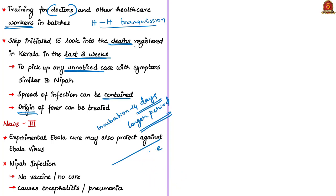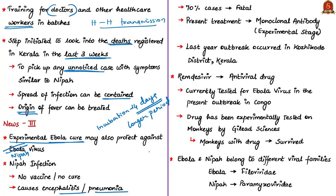The third news article states that an experimental Ebola cure may also protect against Nipah virus. There is currently no vaccine or curative treatment for Nipah infection — whatever we have is to manage the viral infection, but not effective curative treatment. This Nipah virus causes encephalitis and pneumonia and the fatality rate is around 45% to 70% according to WHO, varying with preparatory arrangements put in place. This means out of 100% infected, up to 70% will die, which is why it has been given much importance across Kerala and nearby states.